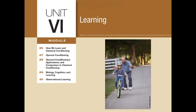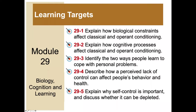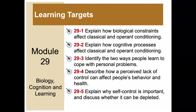Welcome back to unit six. We're still talking about learning, but we are on module 29: Biology, Cognition, and Learning. There are five learning targets: explain how biological constraints affect classical and operant conditioning, explain how cognitive processes affect classical and operant conditioning, identify the two ways people learn to cope with personal problems, describe how a perceived lack of control can affect behavior and health, and explain why self-control is important and discuss whether it can be depleted.